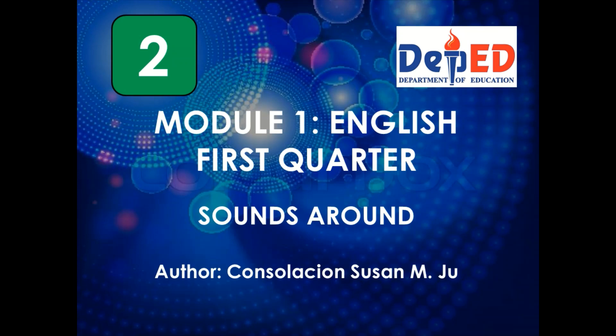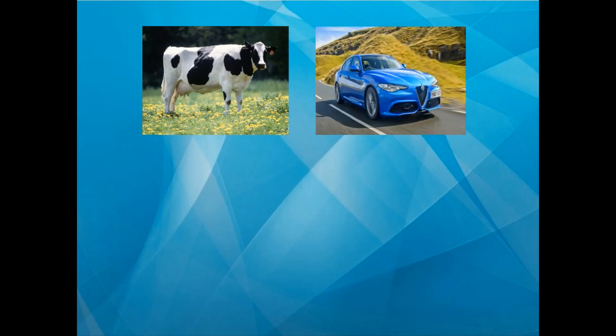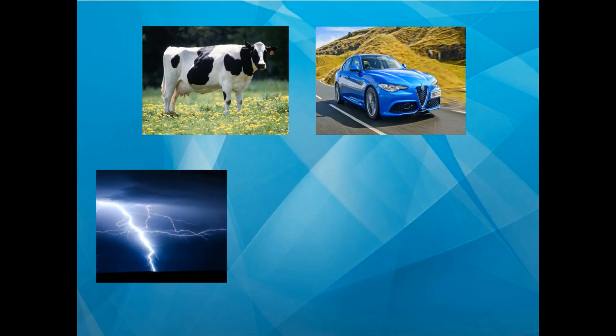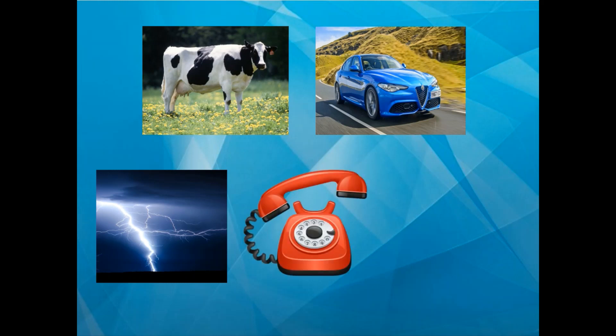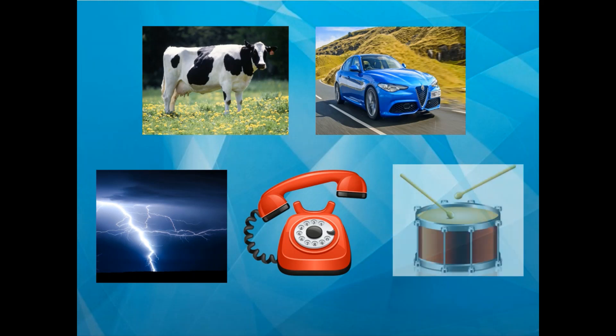Before we start, I would like to show you these pictures. What is this? That's correct! It's a cow. How about this? That's correct! It's a car. How about this one? That's correct! It's a thunder. How about this? That's correct! It's a telephone. How about the last one? That's correct! It's a drum!